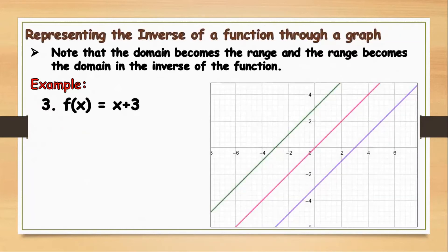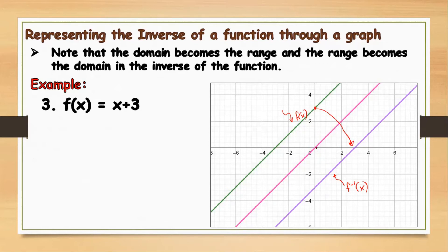Here are the values. The function f(x) = x plus 3 is shown, and this violet one is the graph of our inverse function. This line is the axis of symmetry. All you have to do is check whether the points have a mirror-like reflection along the x equals y line. If you fold your paper and see that the two lines fit each other, then your graphing is correct.